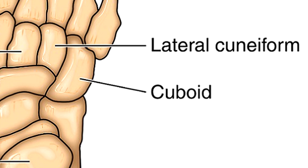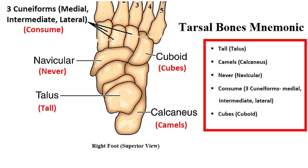On the lateral side of the foot we have the cuboid bone — as the name suggests, it has a cube shape. Here's a mnemonic to remember all seven tarsal bones: 'Tall camels never consume cubes.' The cuneiform bones are reduced to one mnemonic word, and since you know directional terms — lateral, intermediate, and medial — you should be able to identify which cuneiform is which.